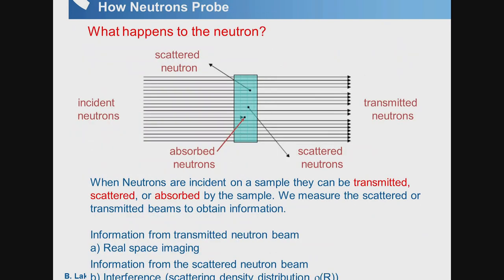What happens when the neutron arrives at a sample? It can do three things: neutrons can pass straight through — those are the transmitted neutrons; they can be absorbed by the sample and come to a stop; or they can be scattered, changing direction. If we place our detector behind the sample, we measure the transmitted neutrons, which is a real-space imaging technique — a form of microscopy.